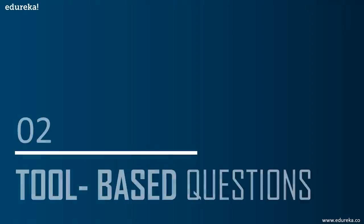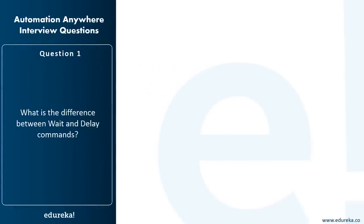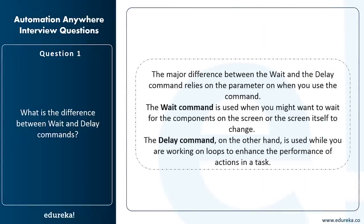Now moving to tool-based questions. What is the difference between the Wait and the Delay commands? The Wait command is used when you want to wait for screen components or the screen itself to change. The Delay command is used when you're working on loops to enhance the performance of actions in a task. The key difference lies in when you want to use the command.